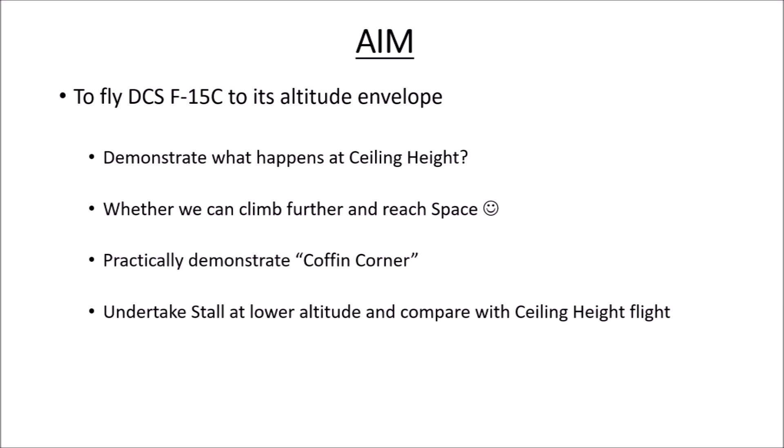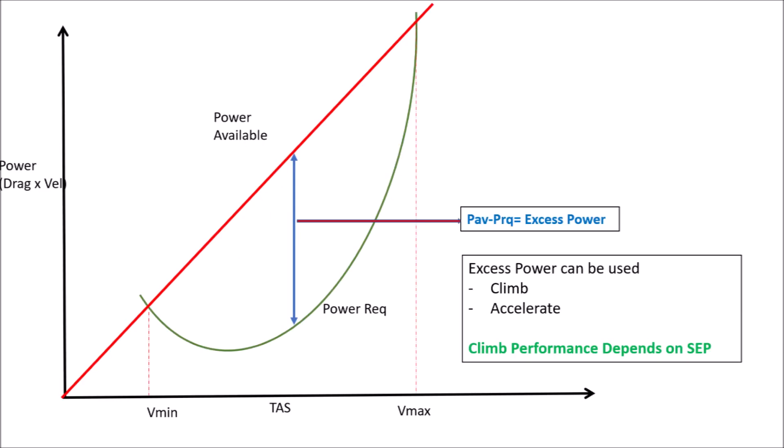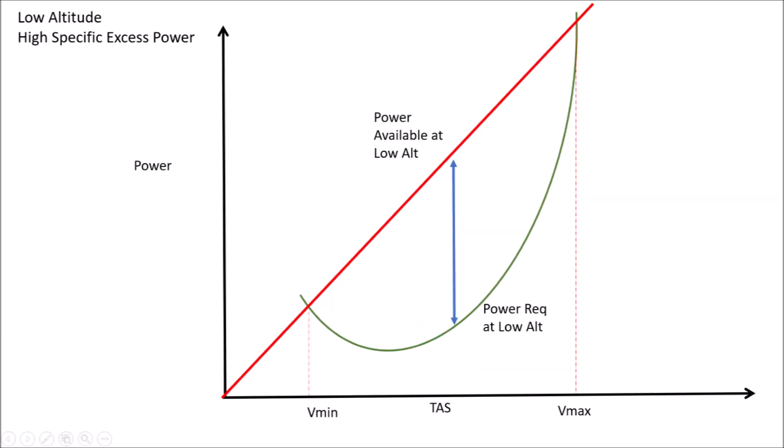Hello everyone, welcome to the Virtual Flight Test Center. The aim of today's exercise is to demonstrate flight at ceiling height — we will practically see whether we can climb further and reach space. This is a typical climb performance graph showing how power varies with true airspeed for a particular altitude. The red line depicts the power available and the green curve shows the power required to sustain flight.